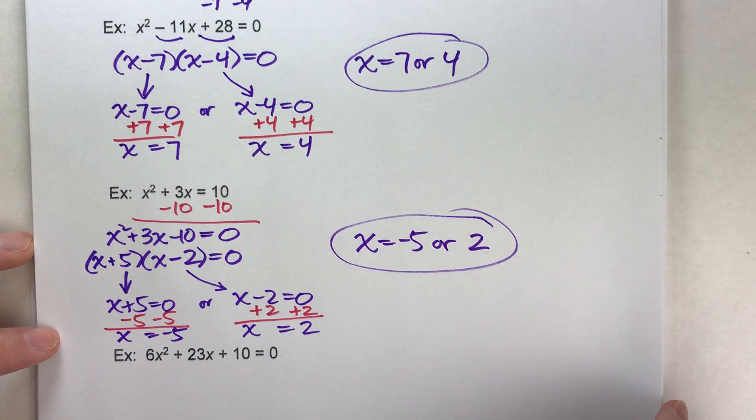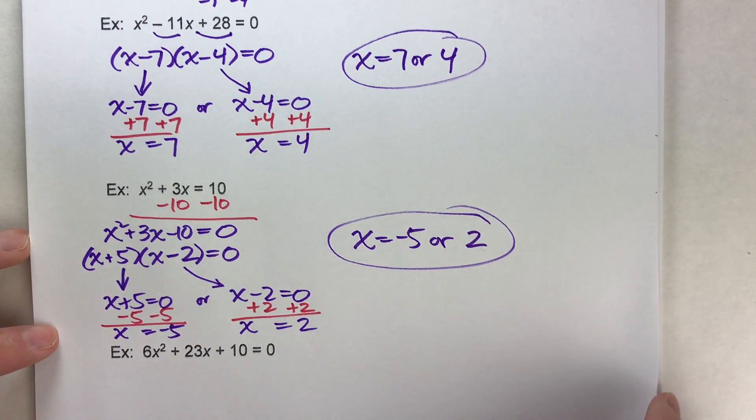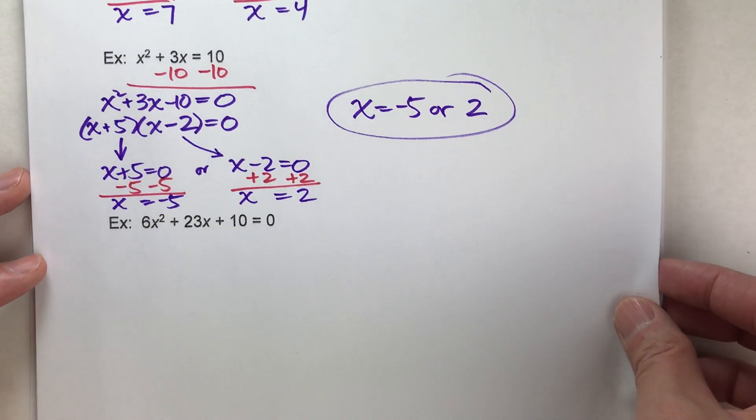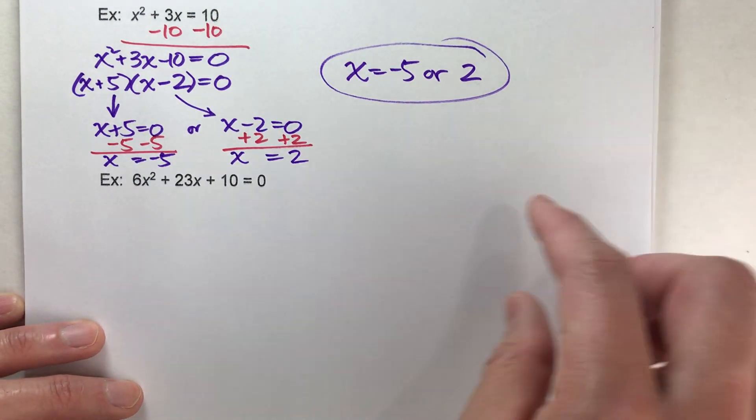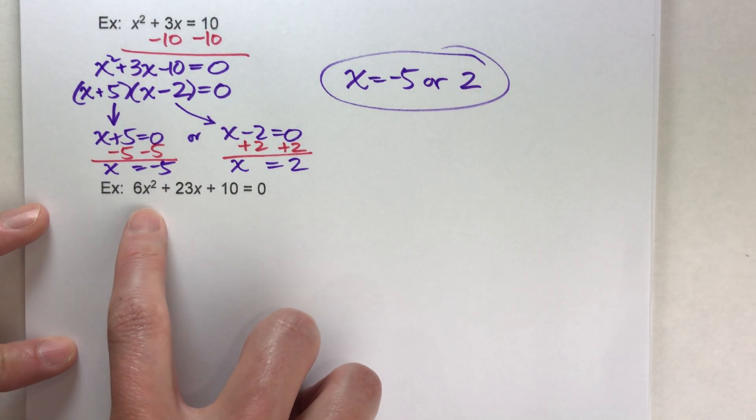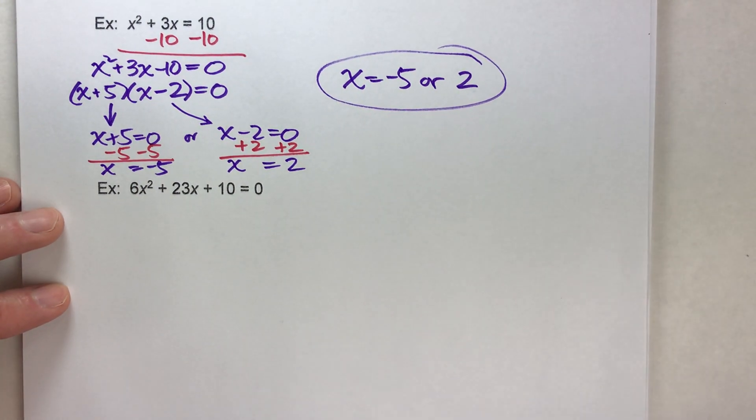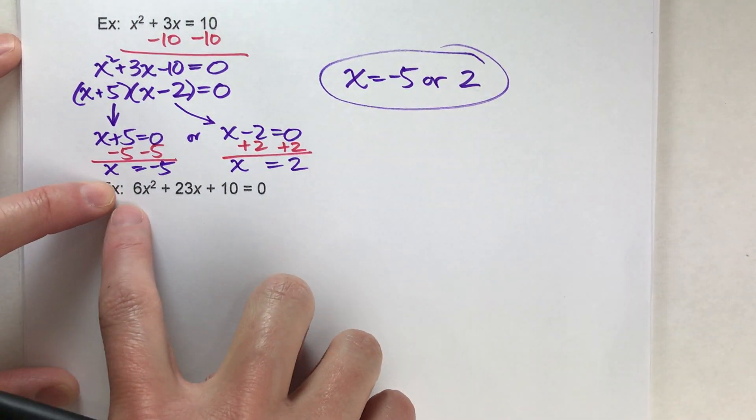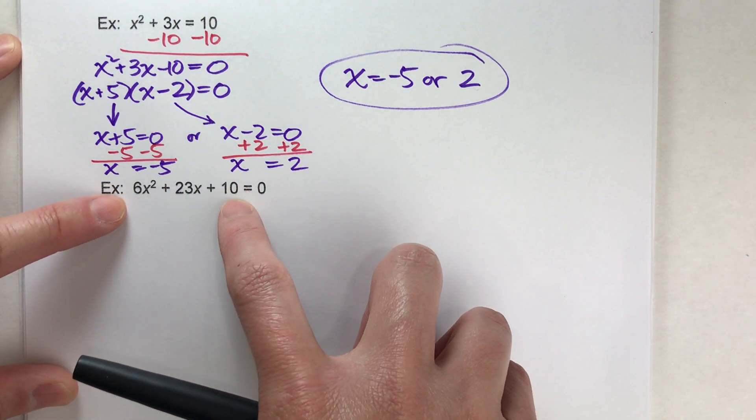Now let's do a harder one. This equation is a little harder because notice we've got a coefficient in front of x squared that's not just 1, so it's going to be a little bit harder to factor. First step: make sure everything equals 0 and all the terms are on one side, and they are.